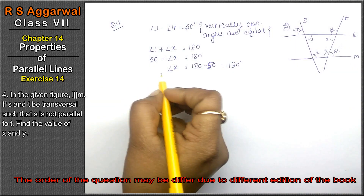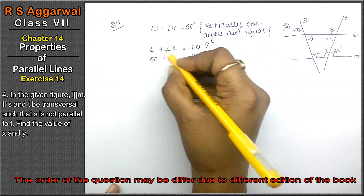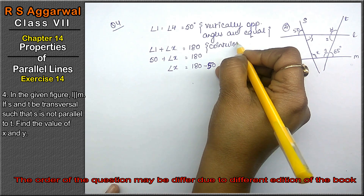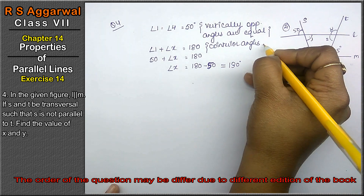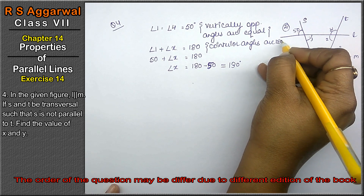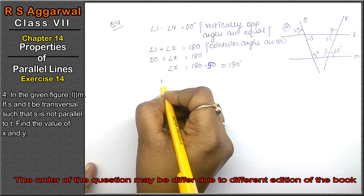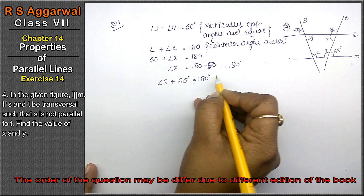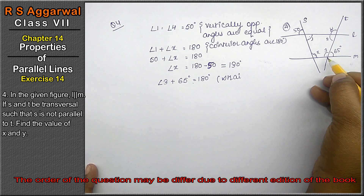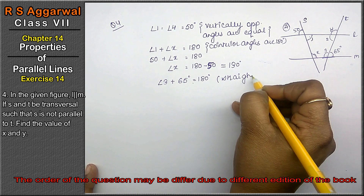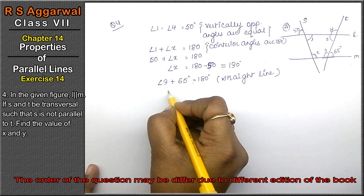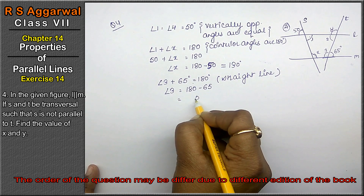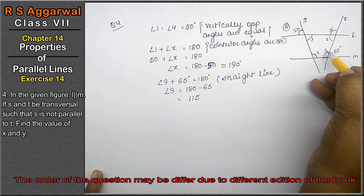Now using the straight line theorem: angle 3 plus 65 degrees equals 180 degrees, so angle 3 equals 180 - 65 = 115 degrees.